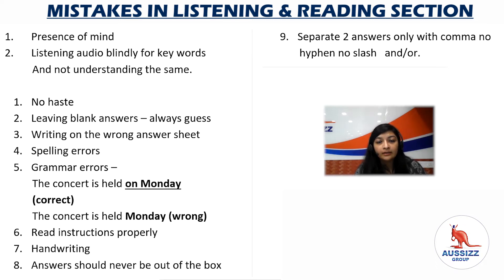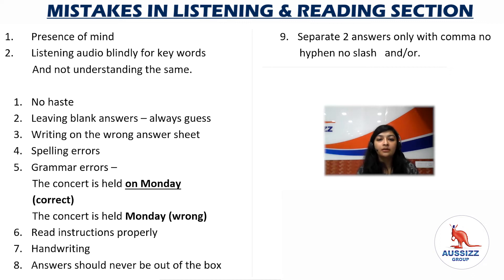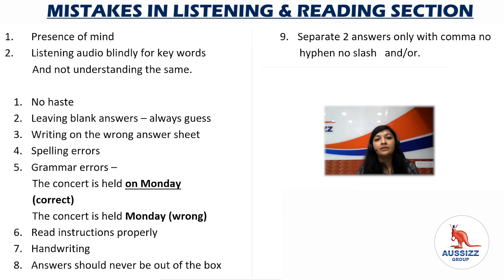The fifth error is grammatical error — usually preposition or article errors. For example, if the question is 'the concert is held ___', your answer is 'on Monday' and not just 'Monday'. When you read the full sentence, 'the concert is held on Monday' sounds correct, but 'the concert is held Monday' is grammatically incorrect. Pay attention to prepositions and articles especially when attempting fill-in-the-blanks and short answer questions.